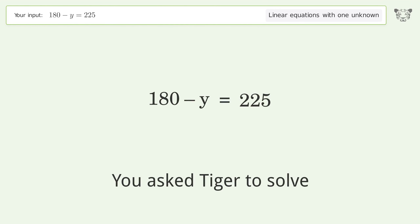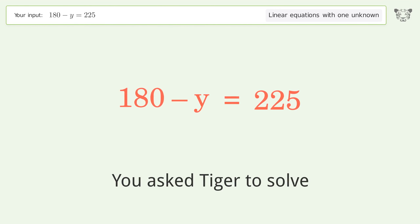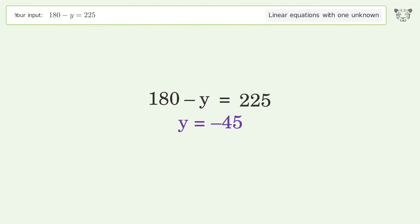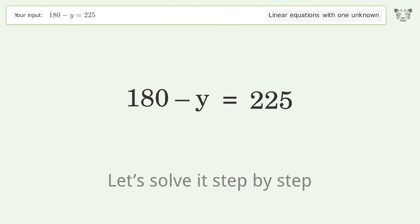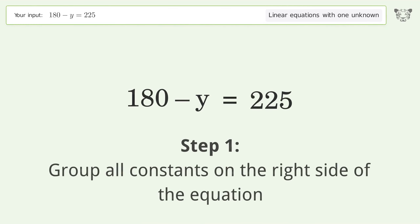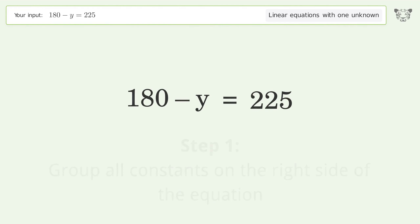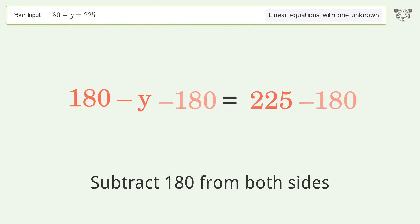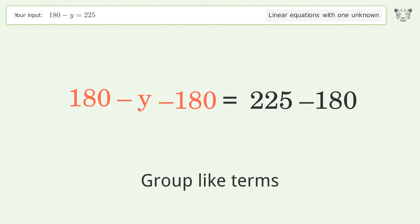You asked Tiger to solve this — it deals with linear equations with one unknown. The final result is y equals negative 45. Let's solve it step by step. Group all constants on the right side of the equation: subtract 180 from both sides, then group like terms.